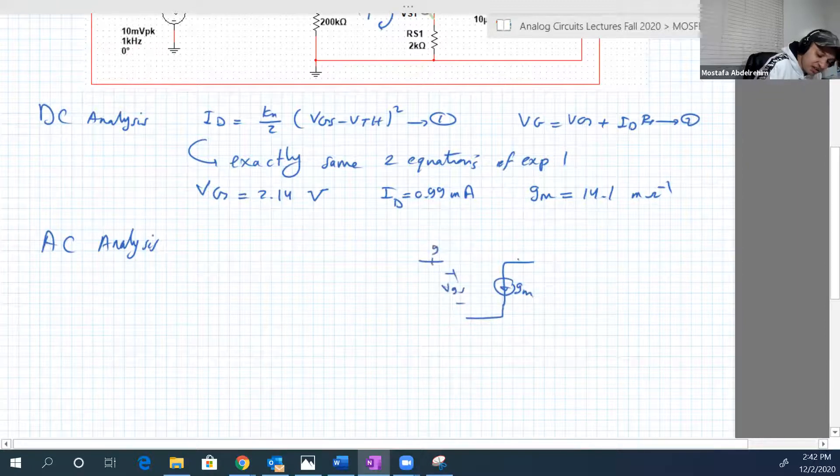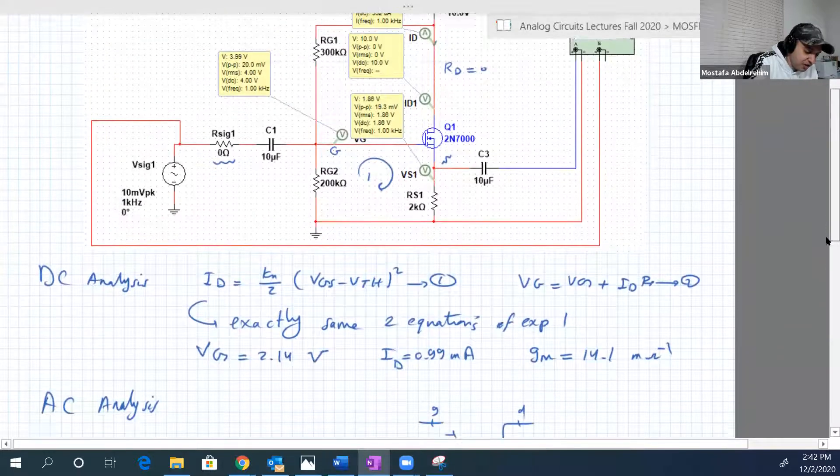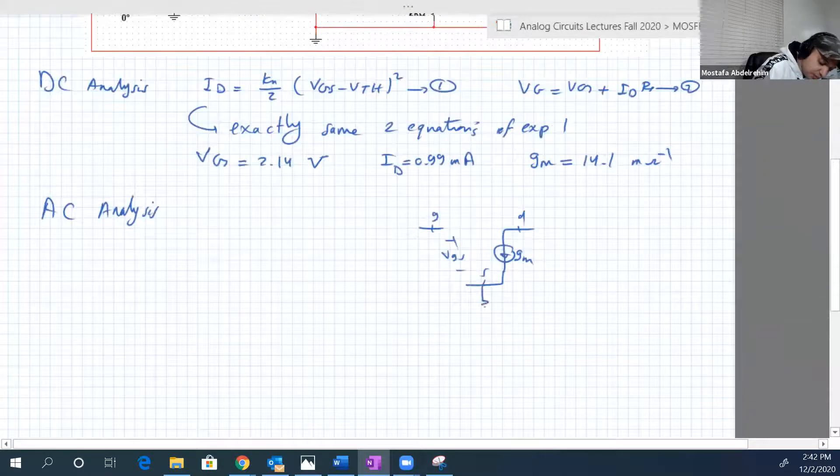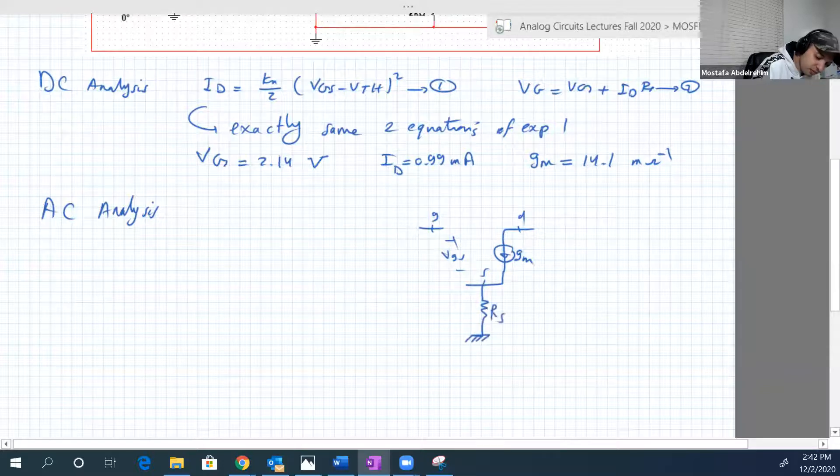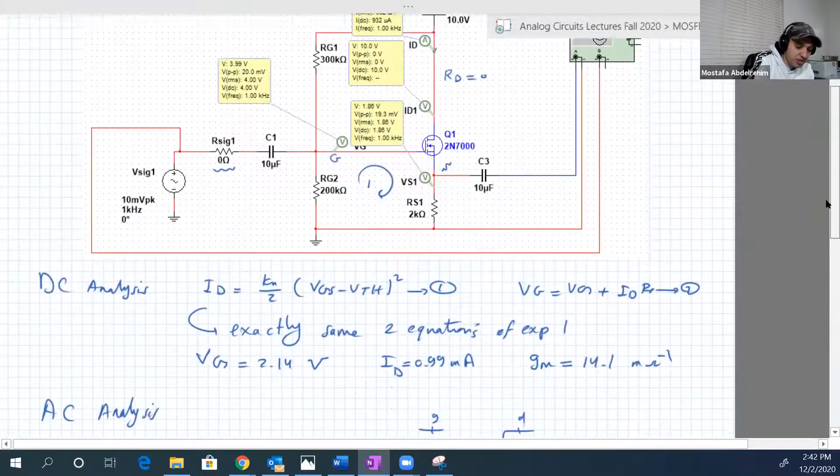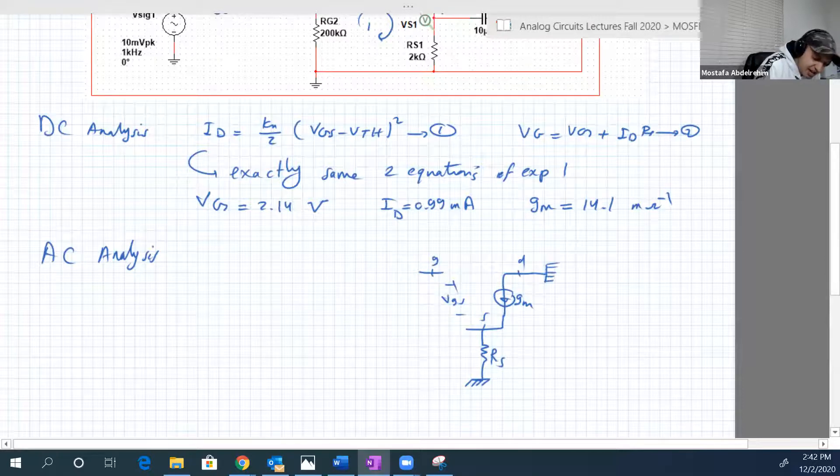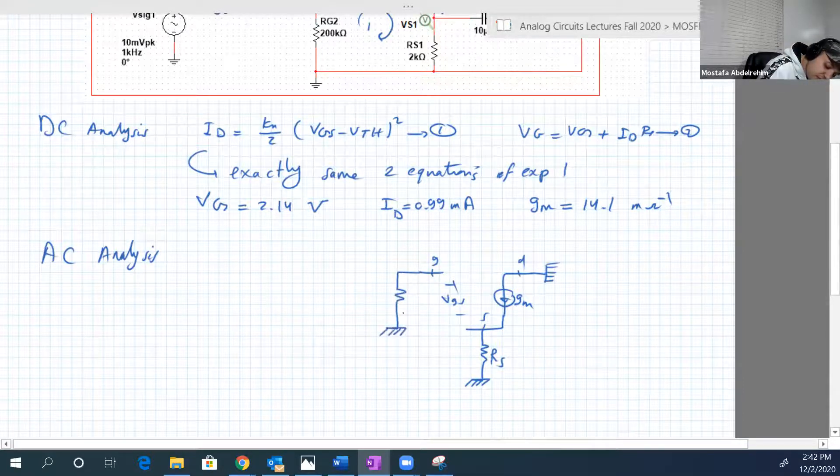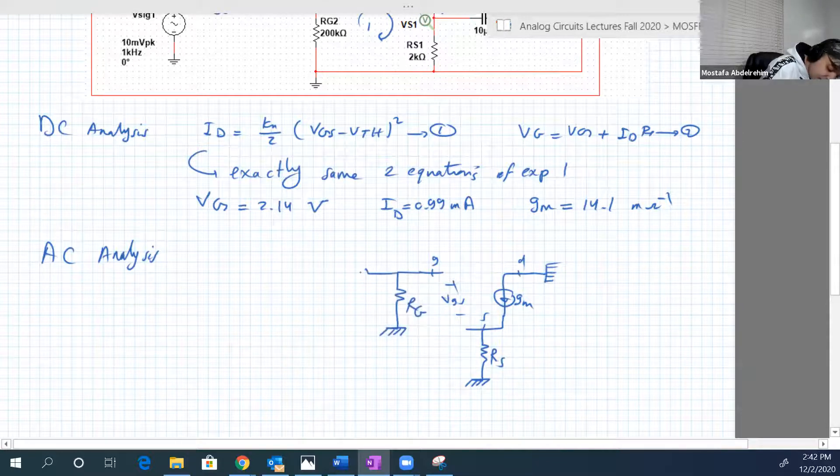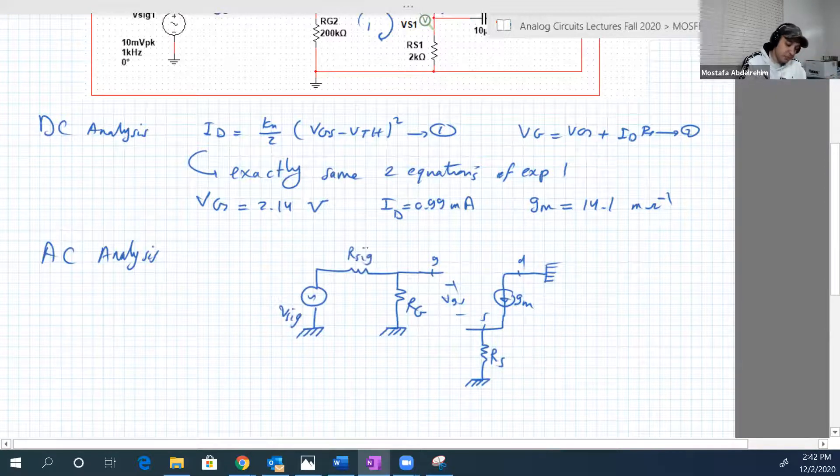Here is VGS, here is the gate, here is the drain, here is the source. So between the source and the ground, there is RS, and the drain is just connected to ground because VDD will be 0 now. And the gate is connected to RG, which is RG1 parallel RG2, then our signal, V signal.